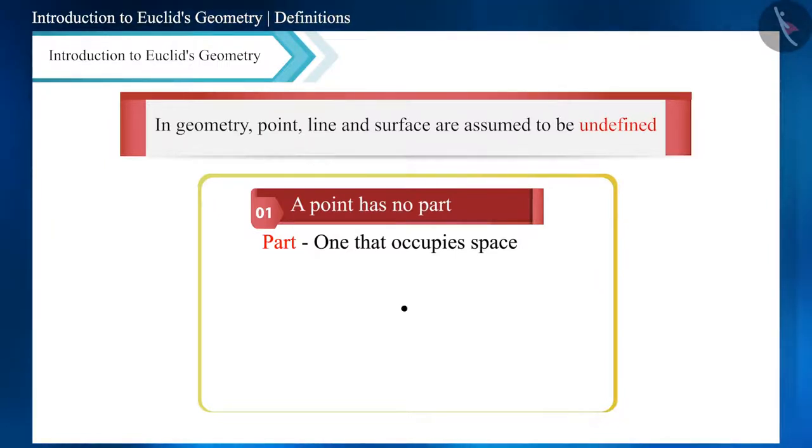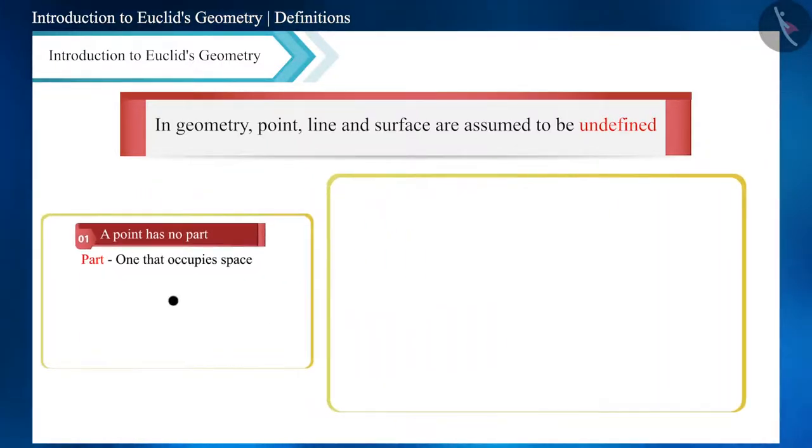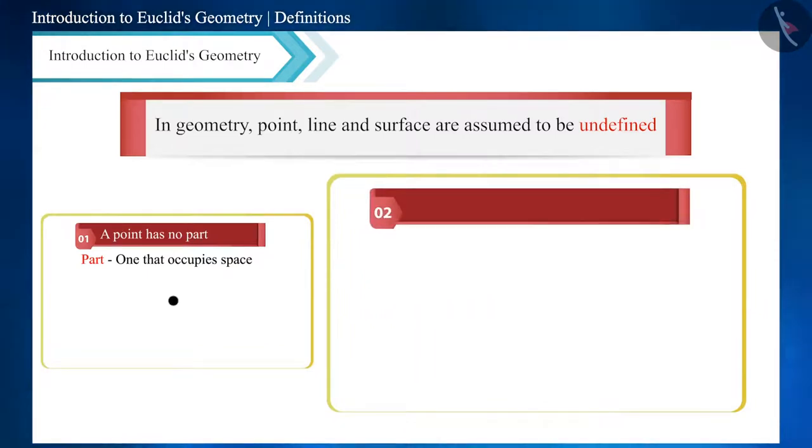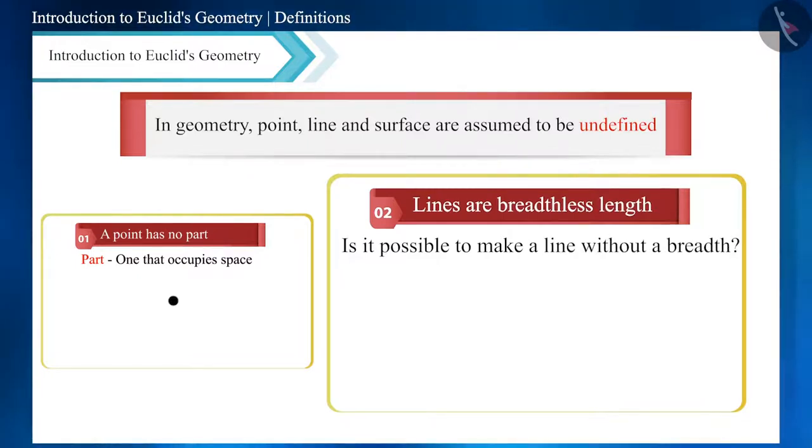And according to Euclid's second definition, a line is a breathless length. Here breath and length are not defined. Friends, can we actually draw a line which has no breath? No, because no matter how thin a line is drawn, it will have some breath.